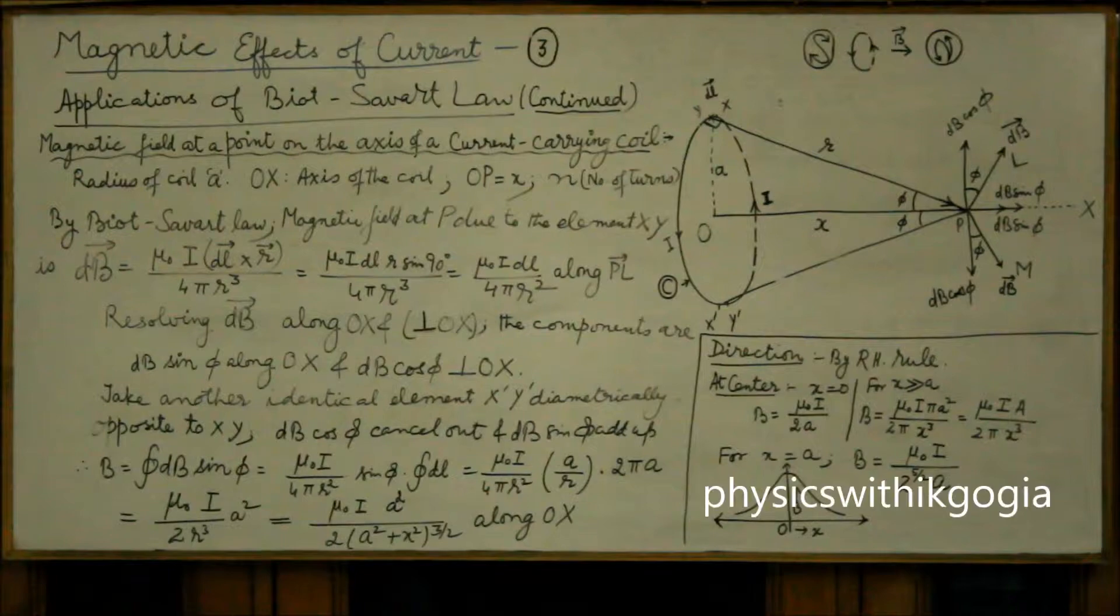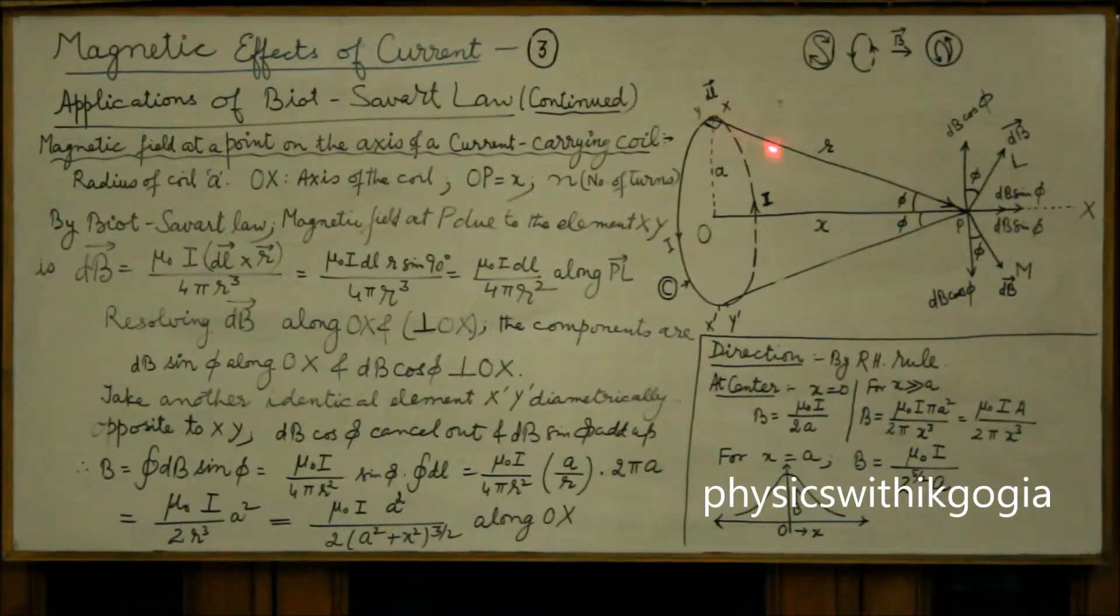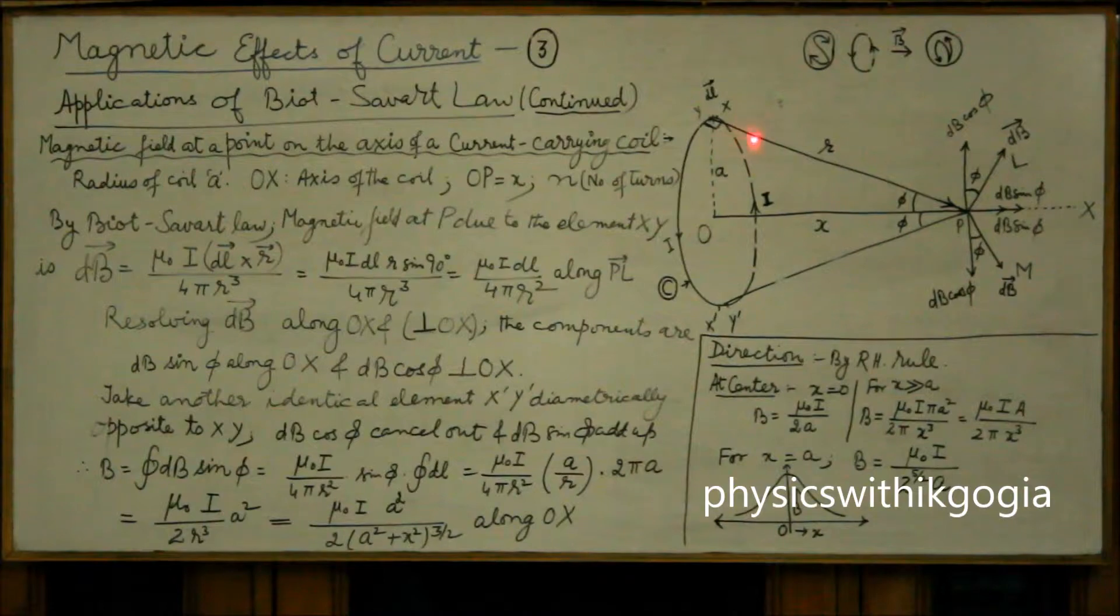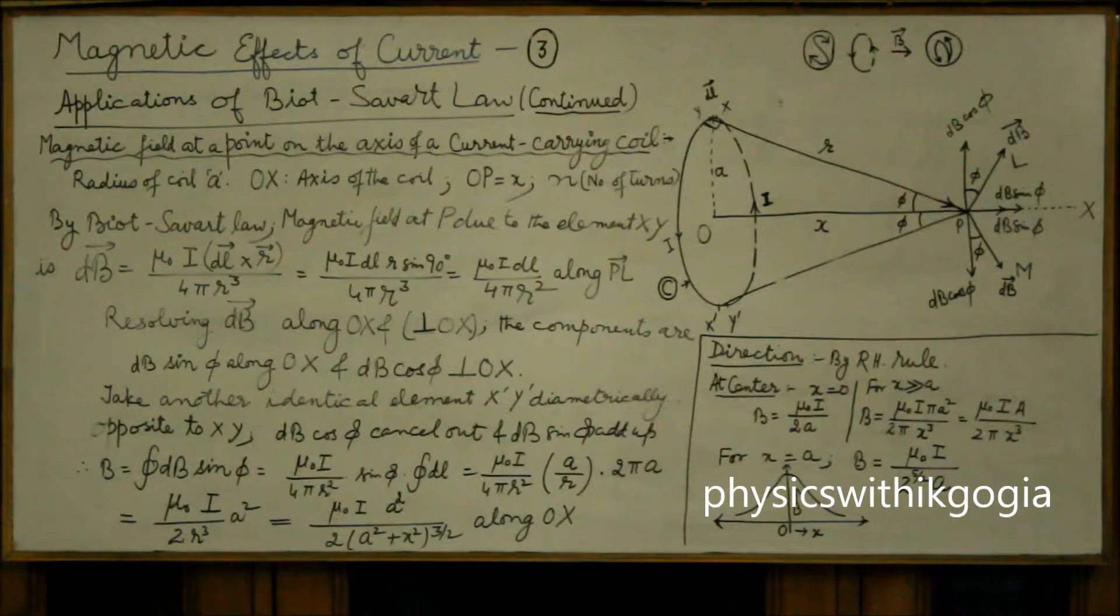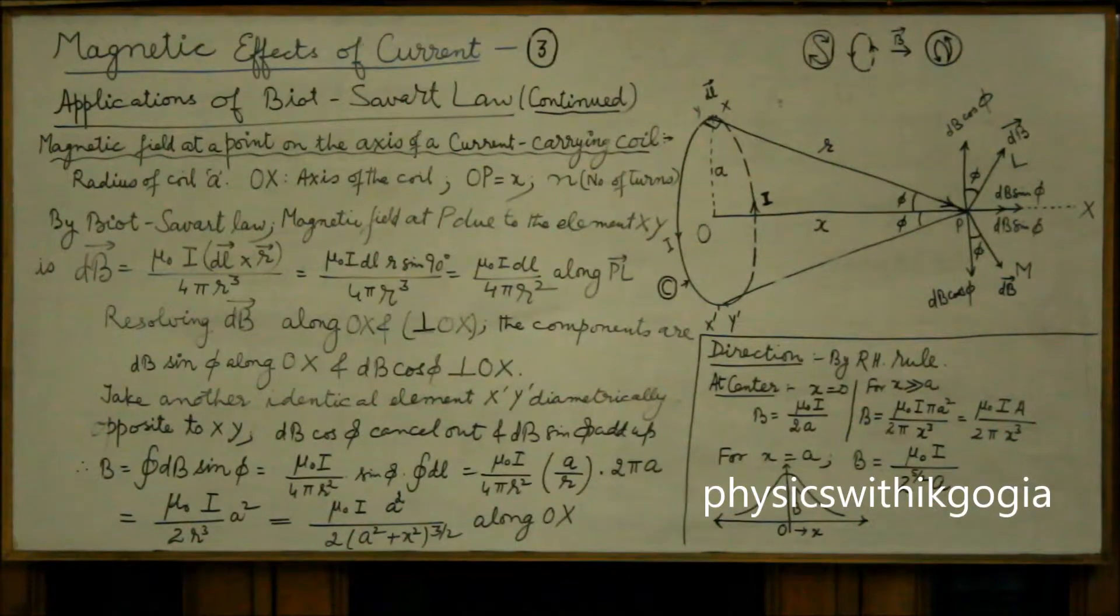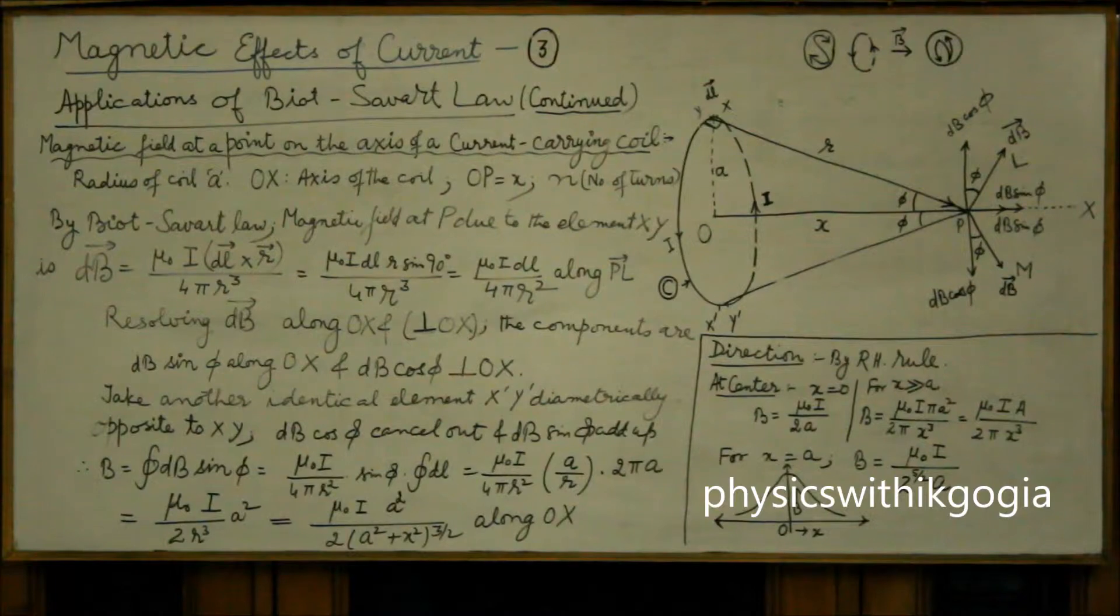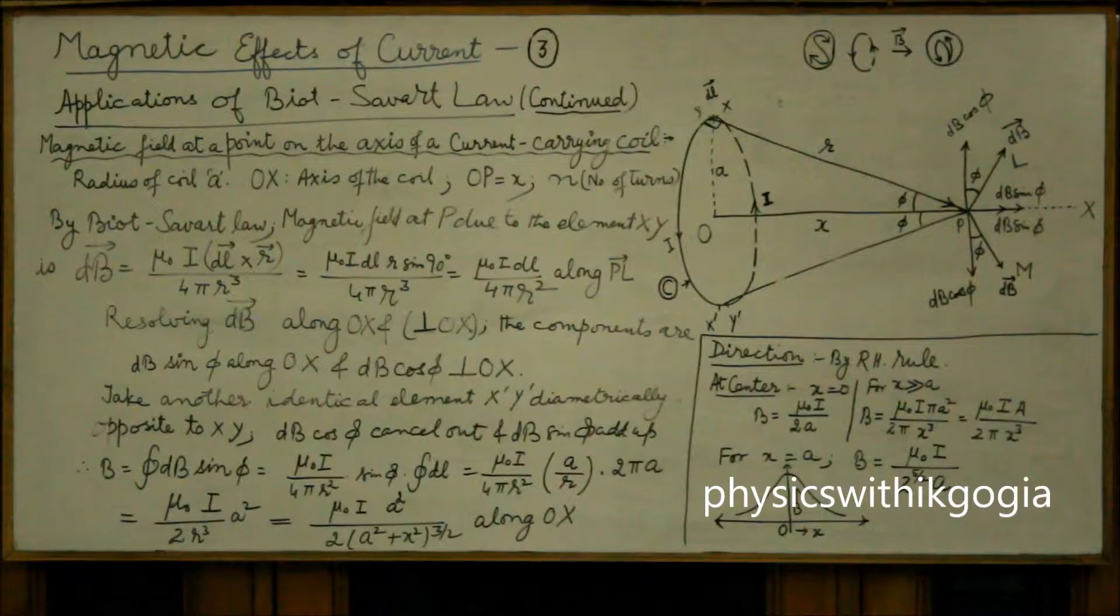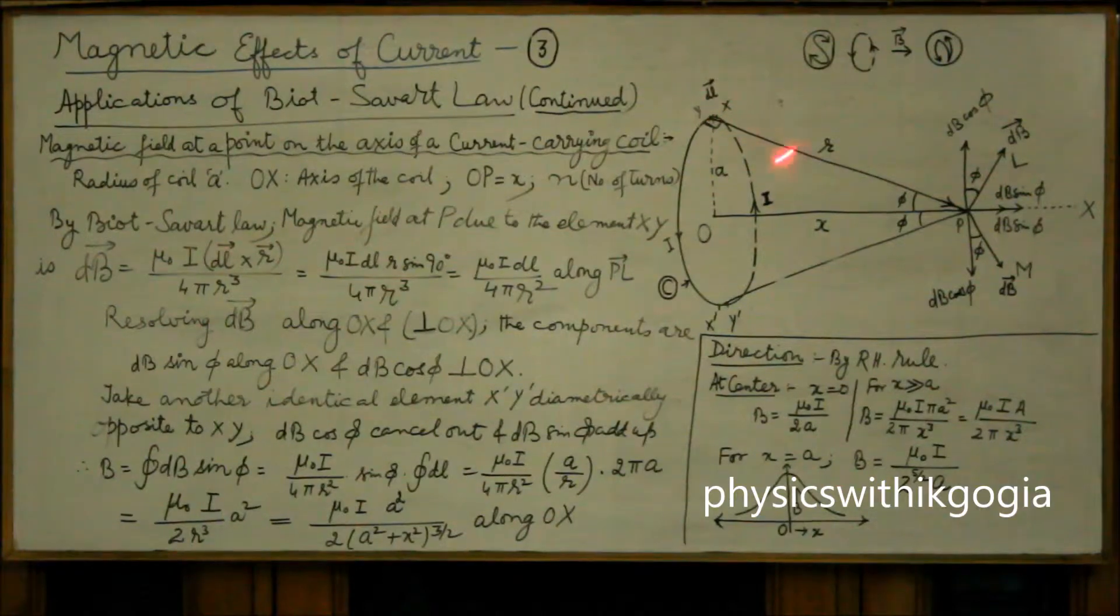Now, if you see this XY element, this XY element will be perpendicular to this r vector, so the angle will be 90 degrees. In order to understand it, you can imagine this XY to be a part of your finger pointing into the board and r divides the angle into two equal parts. That's why the r vector will be perpendicular to this small element.